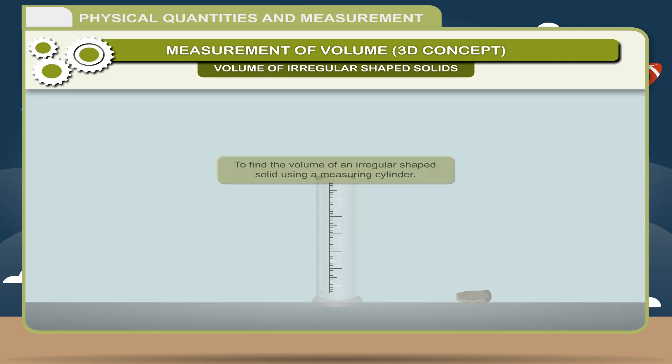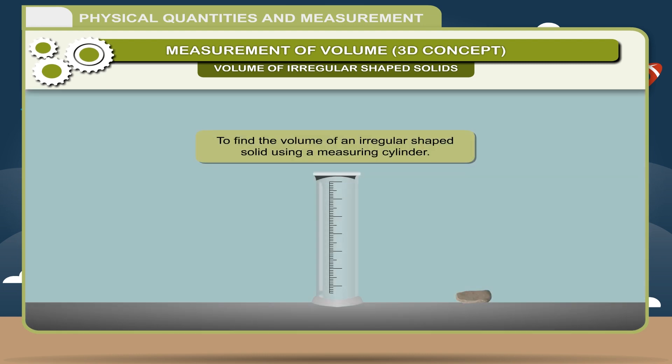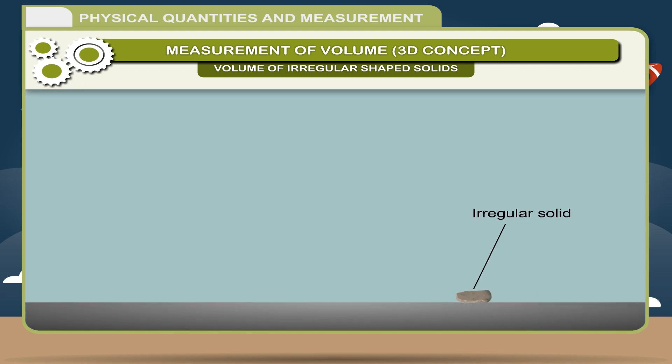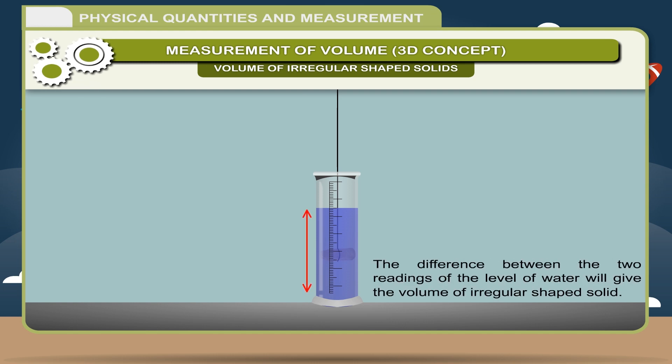Activity: To find the volume of an irregular shaped solid using a measuring cylinder. Take an irregular shaped solid and immerse it completely in a measuring cylinder filled with water. Note the reading of measuring cylinder before immersing the solid and after immersing the solid. The level of water in the second time rises up. The difference between the two readings of the level of water will give the volume of irregular shaped solid.